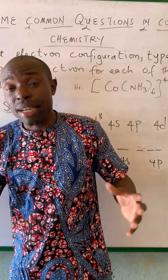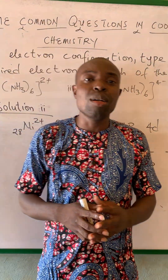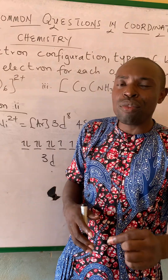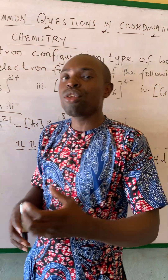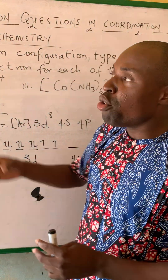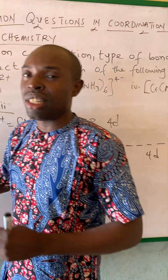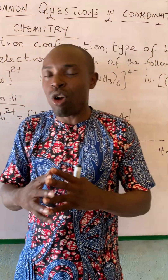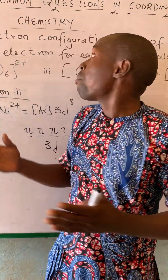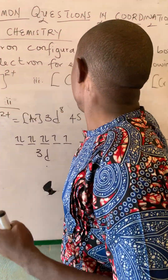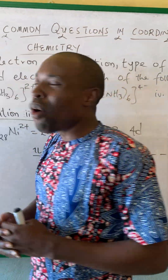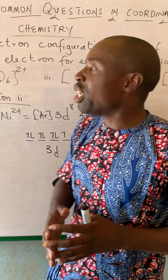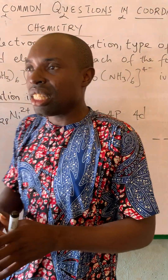Hello everyone, my name is Andran Alain — The Bazooka Profile — and today I'm going to be continuing from the previous video, talking about the use of VBT, which is the Valence Bond Theory, to predict the electron configuration, the type of bonding, and the number of unpaired electrons for each of the following complexes.